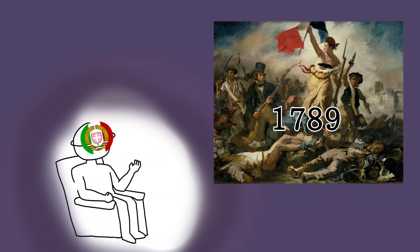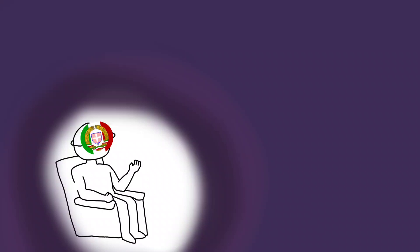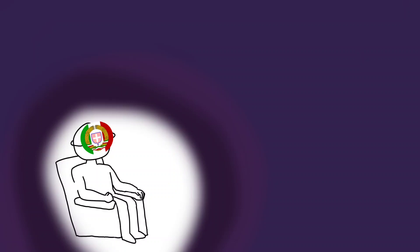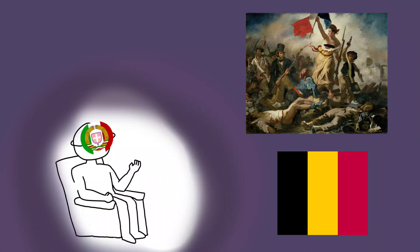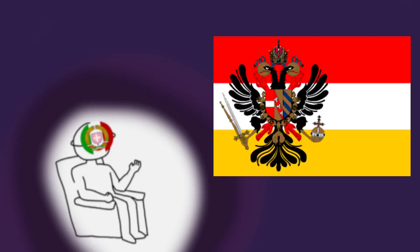Everybody knows about how France's revolution started in 1789 and how it shaped Europe for centuries to come. And many know that Belgium, the country just above France, didn't exist in any form before the 19th century. But did you know that the first country known as Belgium did not get created in the 19th century, but that, in reality, almost simultaneously to the French Revolution, a Belgian revolution took place? Today, we will be looking at the causes and the effects of the Brabant revolution of 1789 and the making of the first Belgian state.